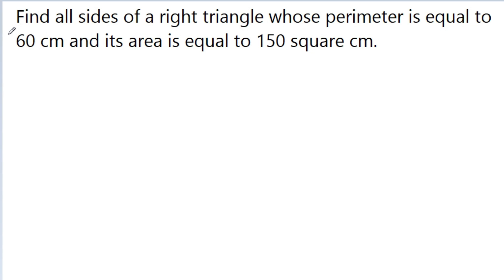In this video, we have a very nice problem. The problem is: find all sides of a right triangle whose perimeter is equal to 60 cm and its area is equal to 150 square cm.